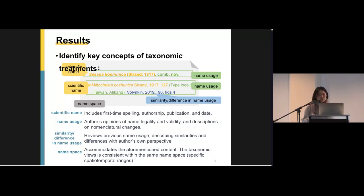So then we identify some key concepts of taxonomic treatments. There are probably many similar words that everybody uses. So the first one is scientific name. Number two is name usage. And three is similarity or differences in name usage and name space. This image here is the part of taxonomic literature, taxonomic treatments in a literature. The first part and the most important part is scientific name.